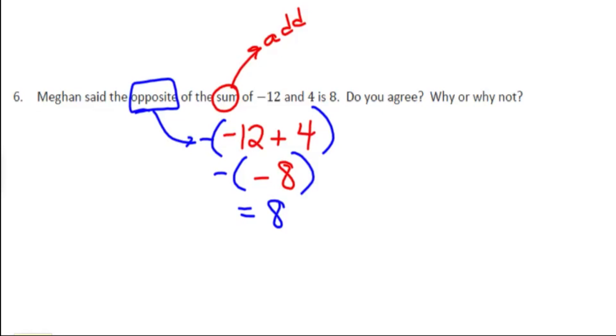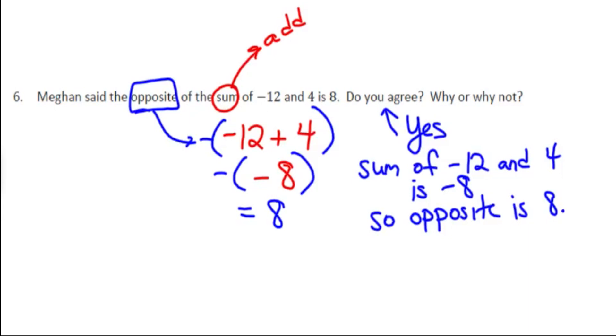So it says, do you agree? The answer is yes. And the reason why we agree is because the sum of negative 12 and 4 is negative 8. So the opposite is positive 8 or just 8.